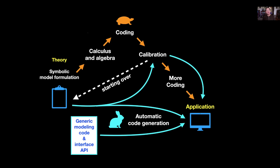Now what we can do with the Enki package is we still have to generate the theory and write down the expression for the high-level description of the thermodynamics — for example, the Gibbs energy of a phase or a solution. But now the Enki framework can automatically generate all the code necessary to calibrate that model and implement the actual applications. Once you've done that initial theory work, which may be a week or two, one can simply press a button and the code goes immediately to application or to calibration.